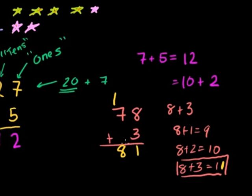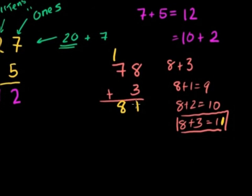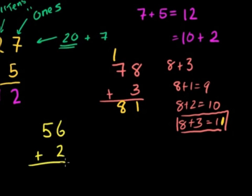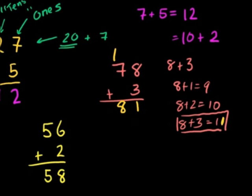There's one thing I want to show you — you don't always have to carry numbers like that, only if the answer to one of these has more than one digit. For example, if I have 56 plus 2, I could just say 6 plus 2 is 8. I don't have anything to add to this 5, so I just bring the 5 down. So 56 plus 2 is 58.